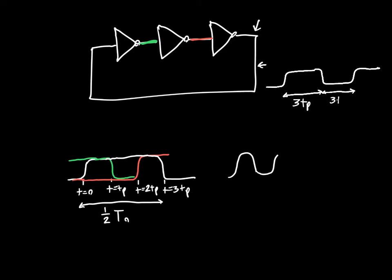And similarly, if we look at the green signal, it's going to look similar, just inverted and delayed like so. So this is going to be 3tp. This is going to be 3tp.